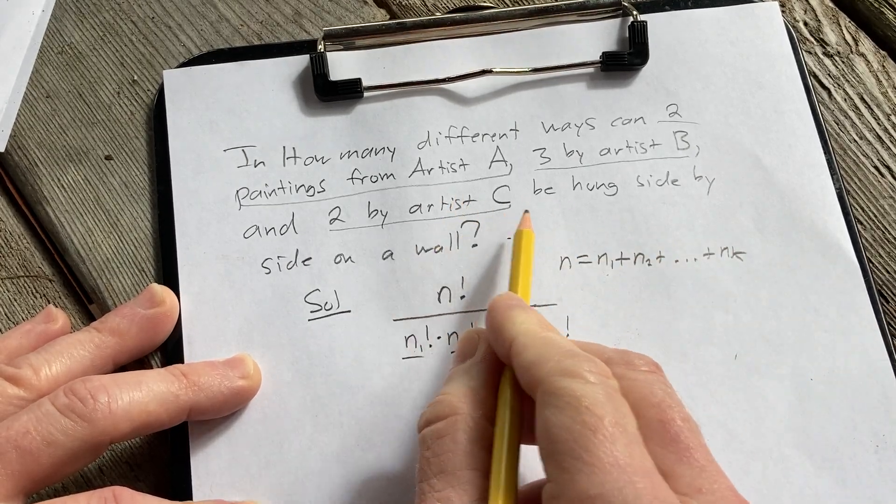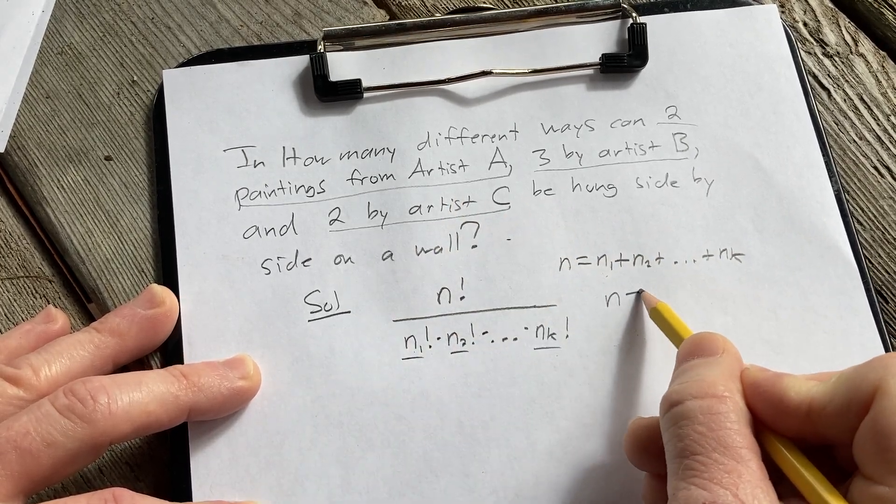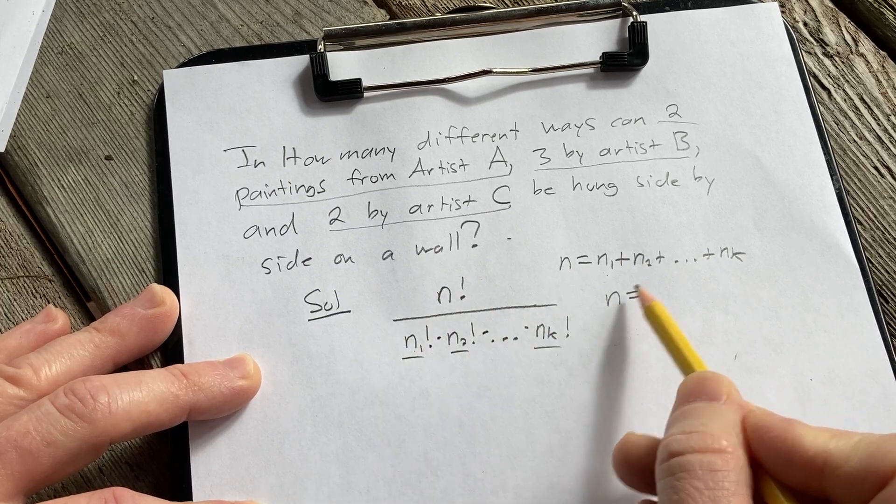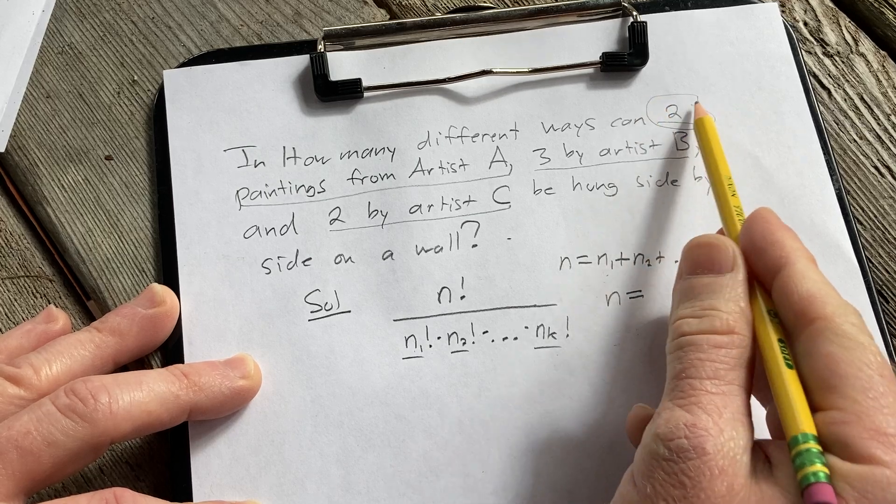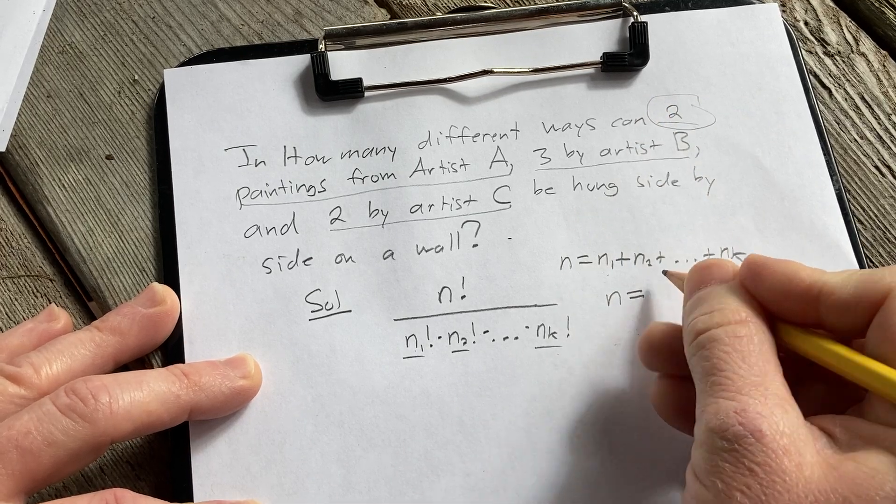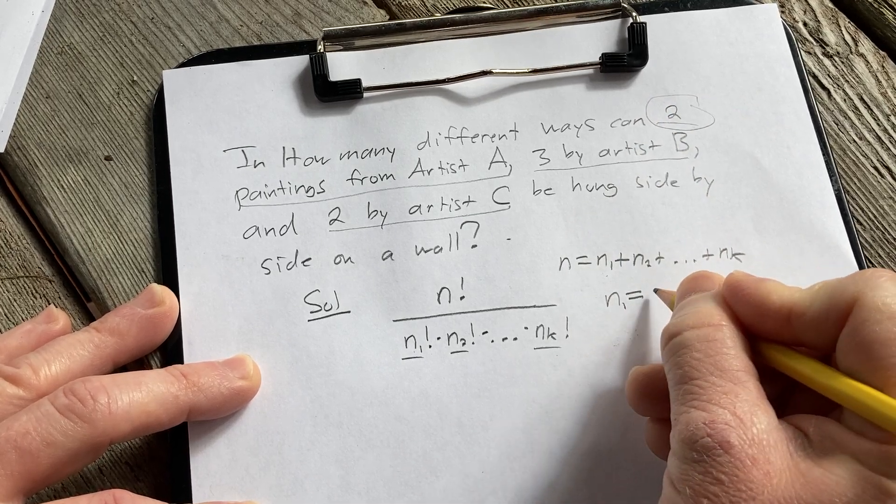So in our particular example, n, well we need to find out what n1 and n2 and n3 are because we have three different artists. So we can say n1 is 2.